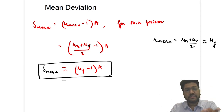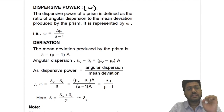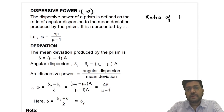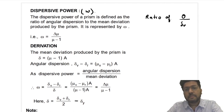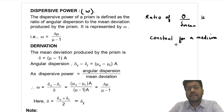Till now we have discussed two definitions: the angle of dispersion and the mean deviation. Now the next definition is dispersive power, which is represented by ω. This is a very, very important definition. It has been found that the ratio of angular dispersion and mean deviation is constant for a medium, and this constant is called the dispersive power, represented by ω.